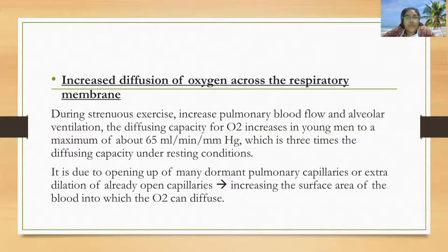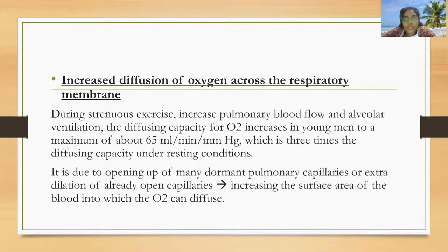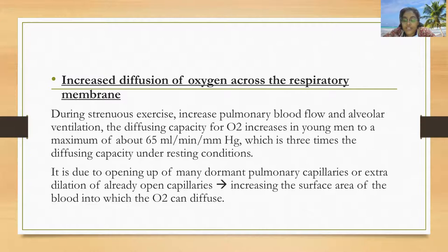The next point is increased diffusion of oxygen across the respiratory membrane. During strenuous exercises, there is an increase in pulmonary blood flow and alveolar ventilation. The diffusion capacity for oxygen increases in young men to a maximum of about 65 ml per minute per mmHg, which is three times the diffusion capacity under resting conditions. This happens due to opening of many dormant pulmonary capillaries or extra dilatation of already open capillaries, increasing the surface area into which oxygen can diffuse.